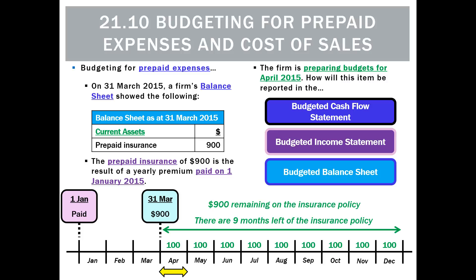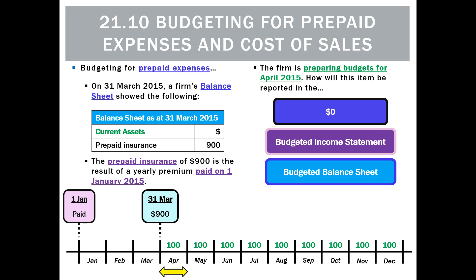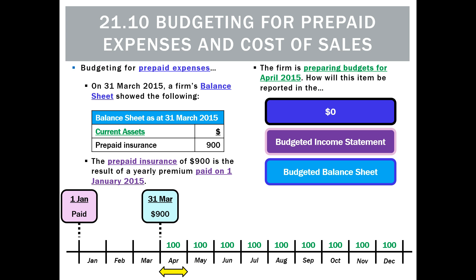During April, what will we actually pay of that insurance? We won't actually pay anything — it was paid back in January. So during this actual month, even though we're going to incur $100, there won't actually be any payments because the payment happened all the way back then. So we can leave that out. In the budget income statement, what will be incurred during April? It's just the one month of $100, so that'll be an expense of $100 in our budget.